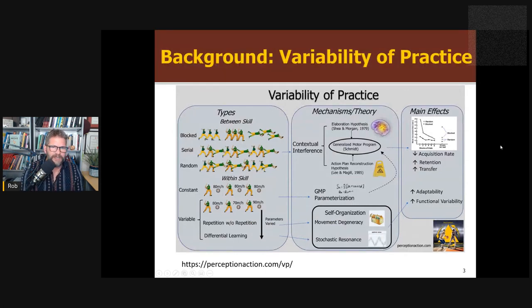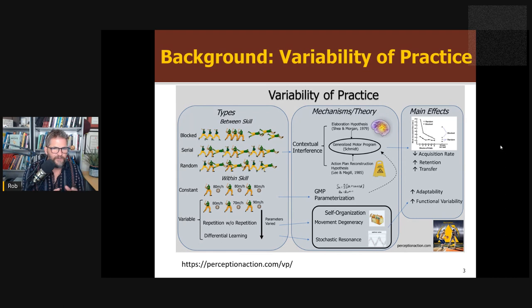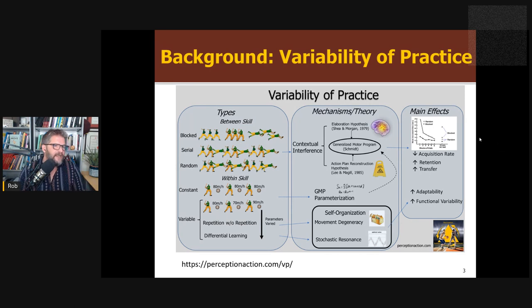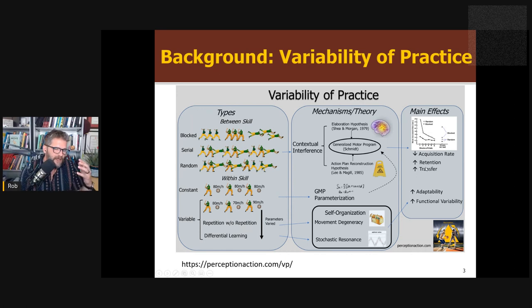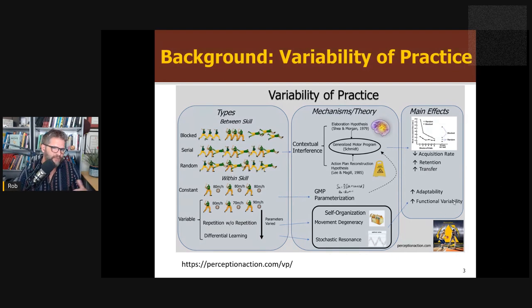In this paper we're going to look at the effects of variability of practice, something I've talked about a lot on the podcast. Basically, we're talking about the classic effect of training with blocked practice, where you repeat the same conditions over and over, versus random practice, where you mix up the conditions. With random practice, when you're switching between conditions, you acquire the skill more slowly, but in the long term — in retention and transfer tests — you perform better with random practice versus block practice.